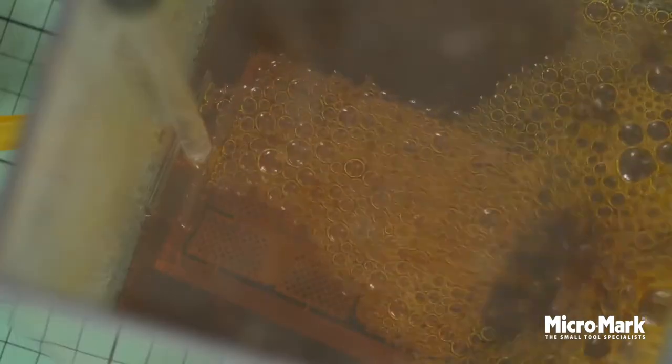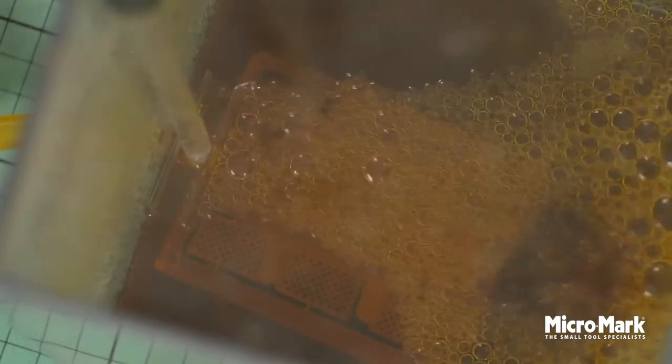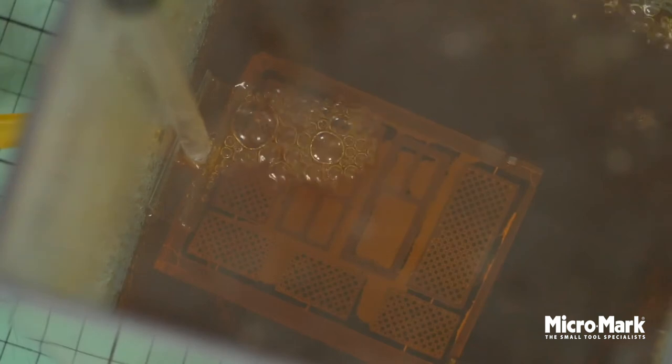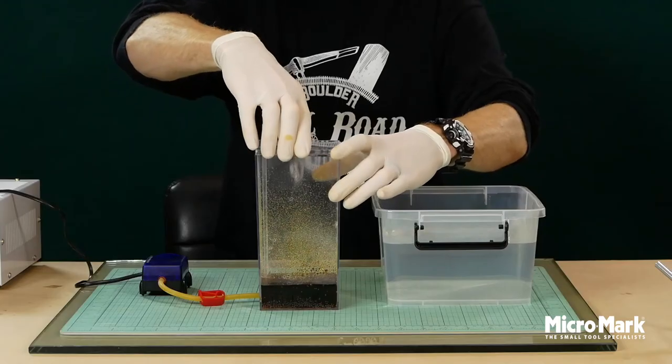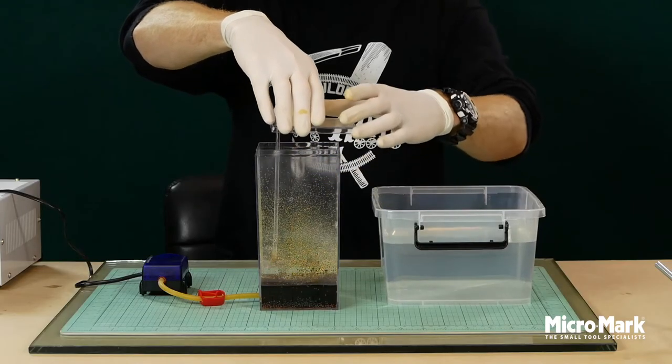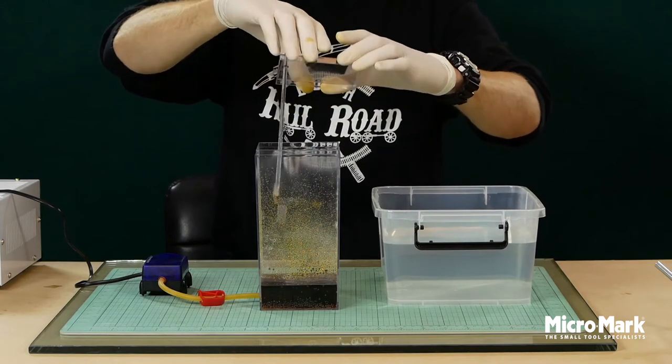The side that's pressed into the clip tends to etch a little bit slower than the other side so that's why we need to rotate it around the clip a few times during etching. Once it's finished remove the parts from the tank and give them a thorough rinse in water. Some bits broke away but that's okay.